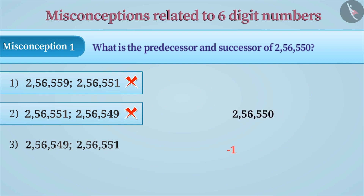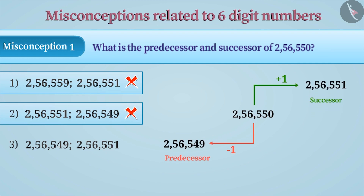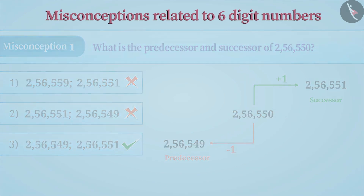When 1 is subtracted from any number, the result is the predecessor of that number, and when we add 1 to a number, we get the successor. Hence, the correct answer is option 3.